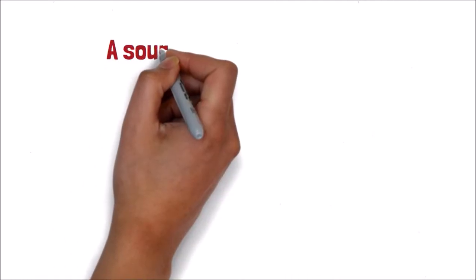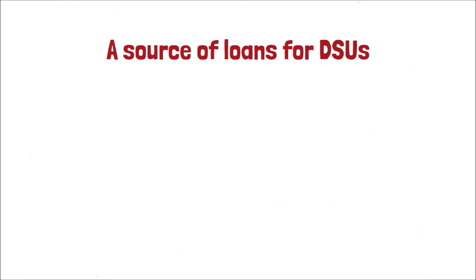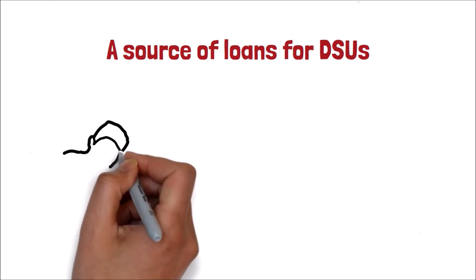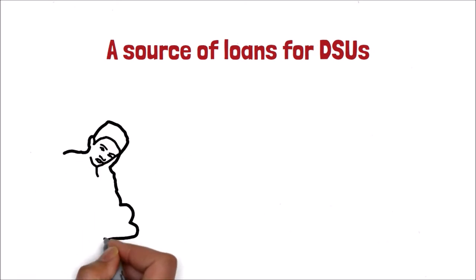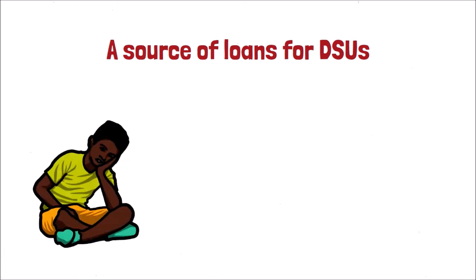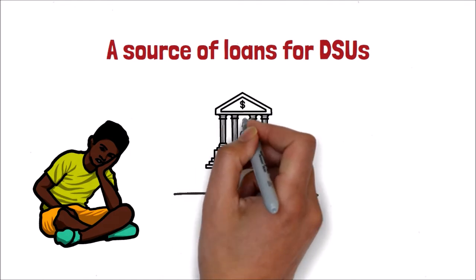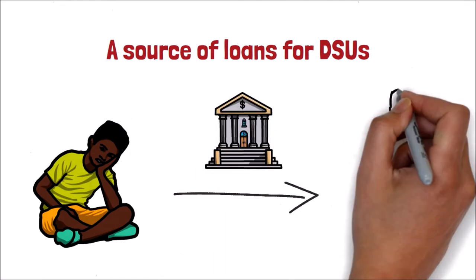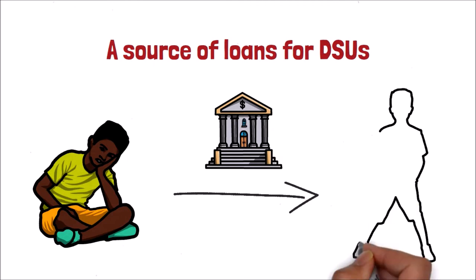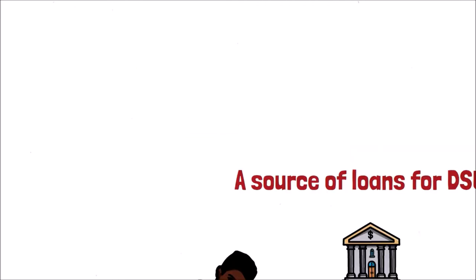Role 2: A source of loans for DSU. DSU would not always be able to obtain timely financing for attractive projects. In the cases of Lily and Wang Wang, they can borrow from the bank and do what they want, such as investing or buying a house.